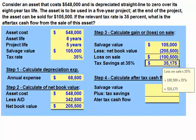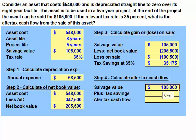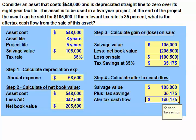We calculate our tax savings by taking the loss of $100,500 and multiplying it by our 35% tax rate. The last step is to calculate the after-tax cash flow from the sale of our asset at the end of the project. This is equal to our salvage value of $105,000, which is cash we received from the sale of the asset, plus the tax savings we calculated from step three above of $35,175. Our after-tax cash flow is $140,175.